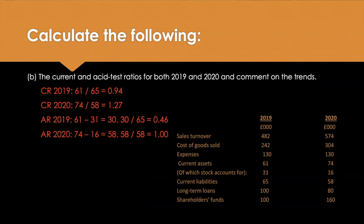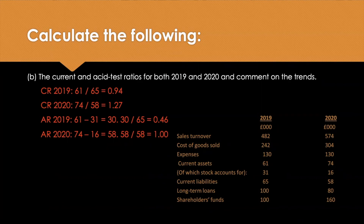The acid test ratio takes stock out of the equation, because some argue that you can't liquidate stock as easily as other assets like buildings and machinery. In 2019, you take your 61 current assets minus the 31 of stock, which leaves 30. Divide that by your liabilities of 65, giving a ratio of 0.46 in year one. In the following year, because borrowing went down and stock holding also reduced, your 74 minus 16 leaves 58, and 58 divided by liabilities of 58 gives a ratio of exactly 1.